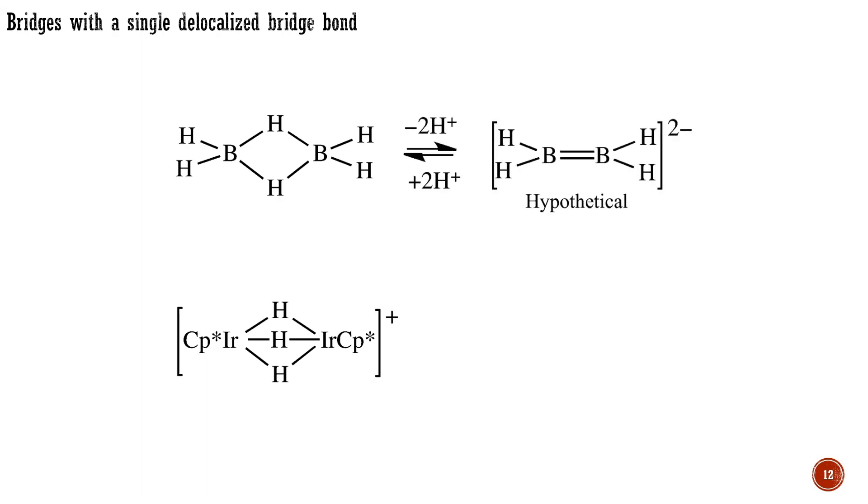Diborane can alternatively be considered as the double-protonation product of the hypothetical ethylene analog shown here, where the protons add to the two lobes of the hypothetical boron-boron pi bond. A hypothetical deprotonation strategy holds for transition metals. We can count any bridged hydride by removing each hydrogen as a proton, thus converting each metal-hydrogen-metal to a metal-metal bond. Now we can count the resulting hypothetical structure. 14-electron Cp-star iridium now reaches 18 electrons by counting 3 electrons for the hypothetical metal-metal triple bond and assigning minus 1 of the 2-anionic charge to each iridium. Here the bridging bonds, although shown as two separate bonds, are actually half-order bonds.